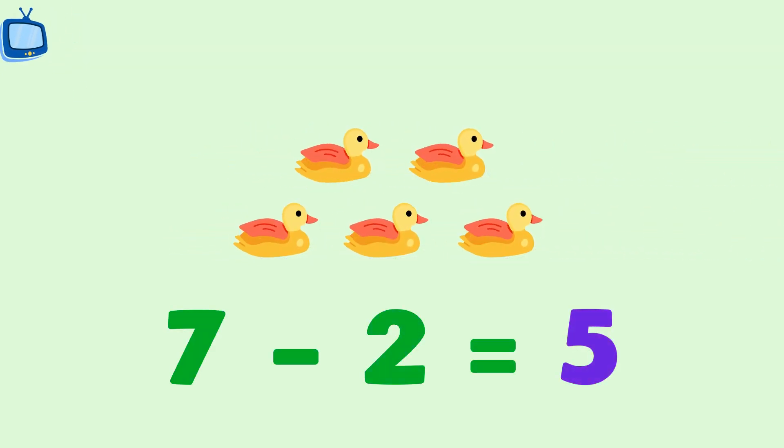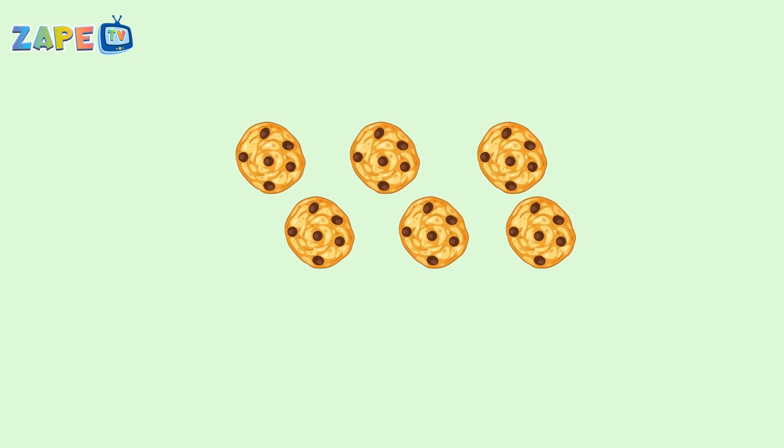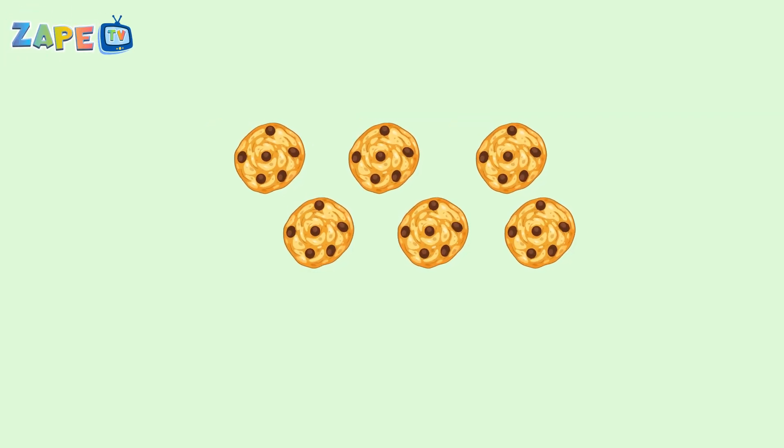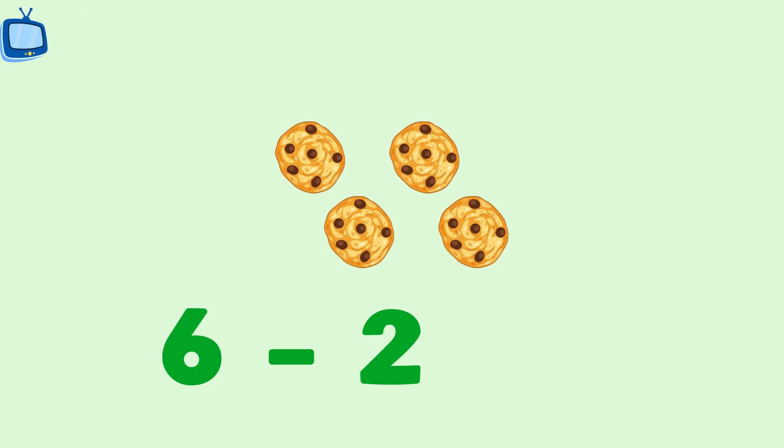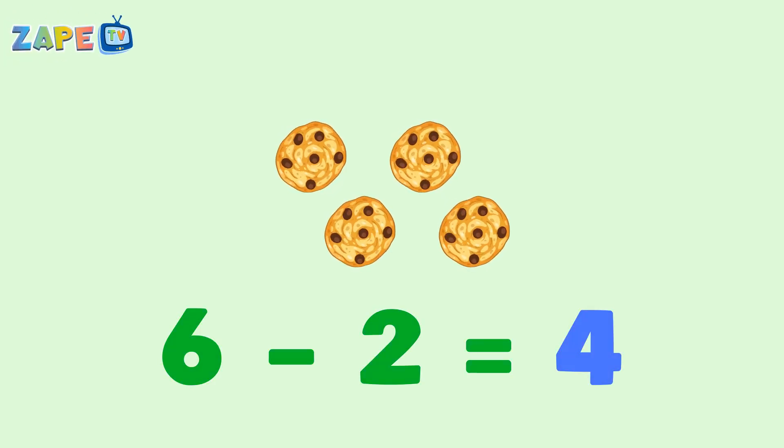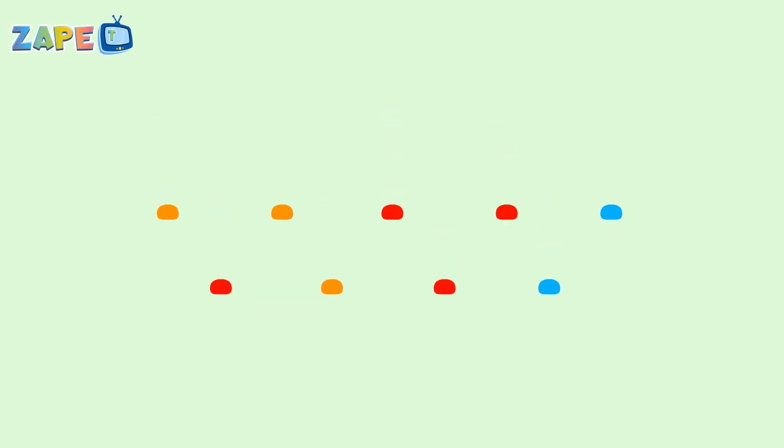Six yummy cookies on a plate. Eat two up now, four look great. Nine bouncy balls rolling on the ground. Take away four now, five are found.